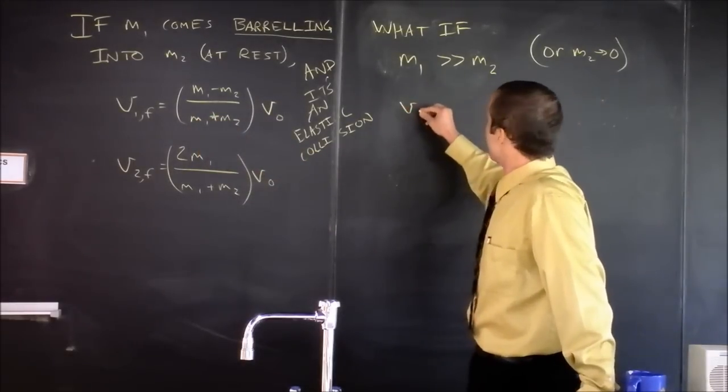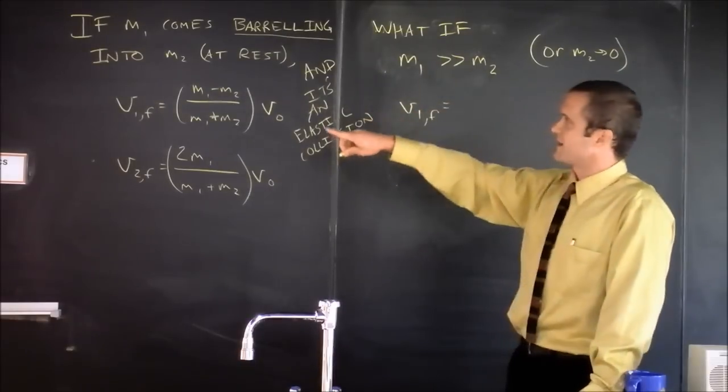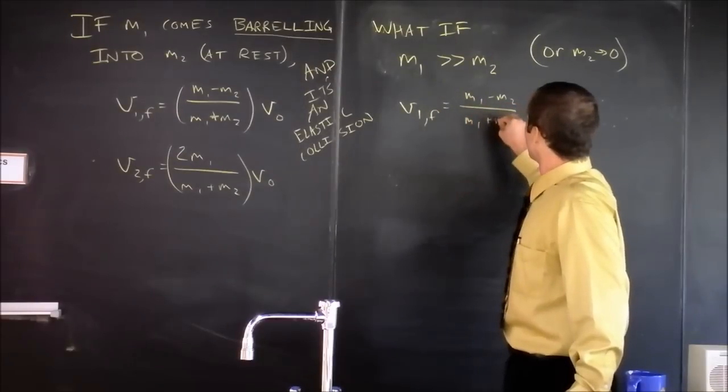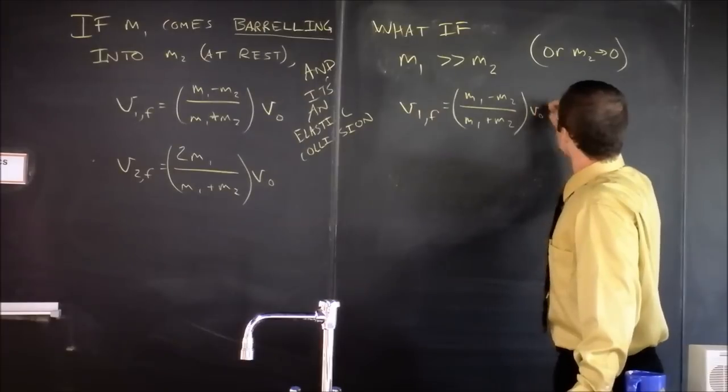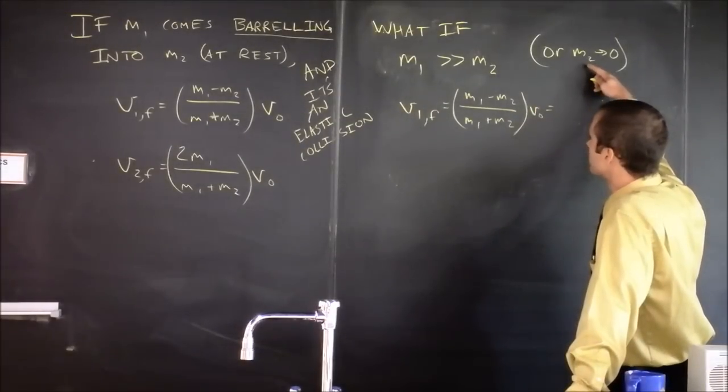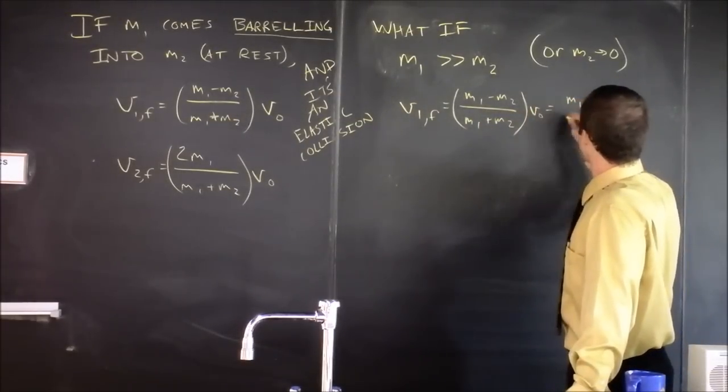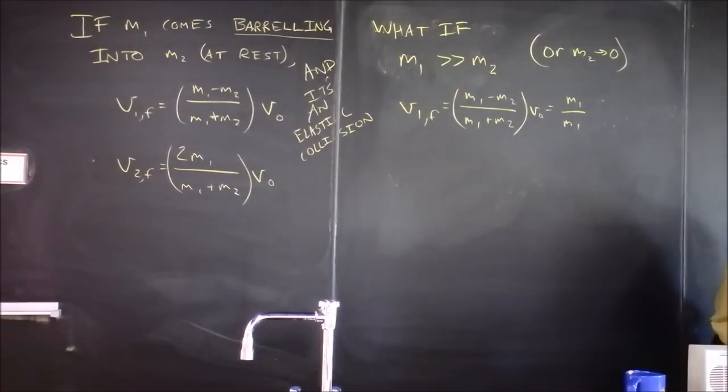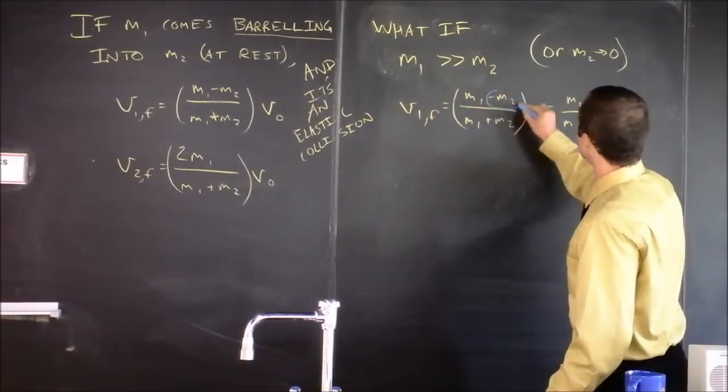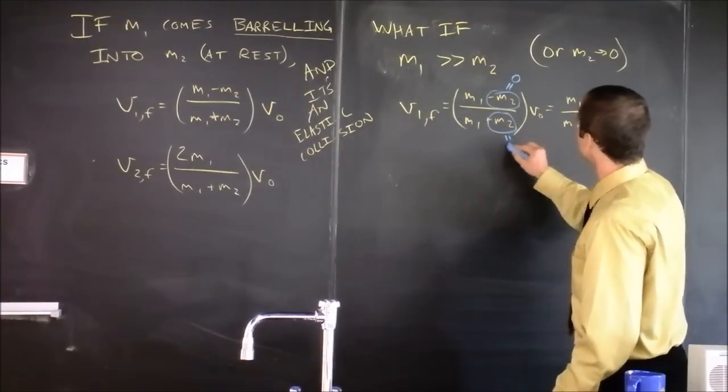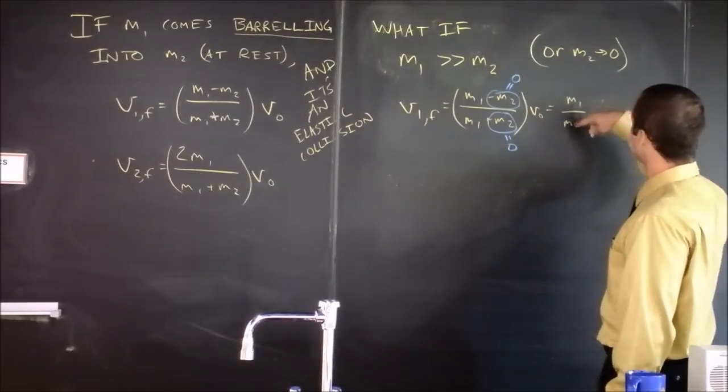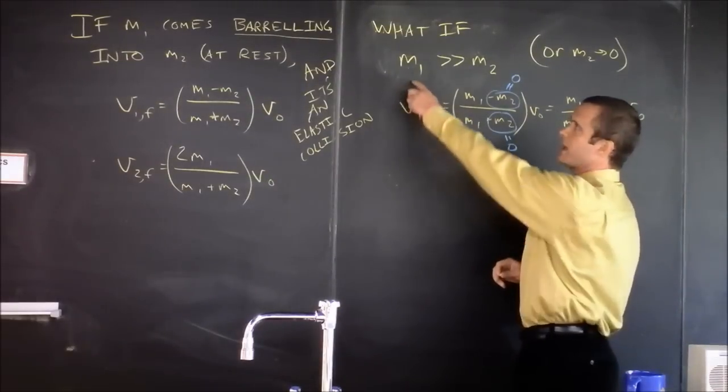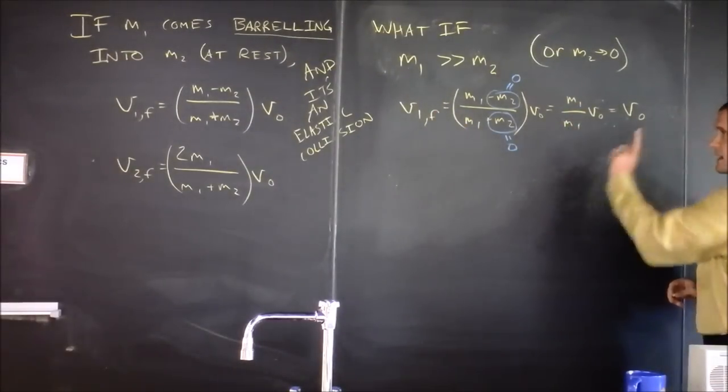So let's look at the final velocity of the massive thing. How does that change? We're going to have M1 minus M2 over M1 plus M2 times V0. And we're supposed to say M2 goes to zero. So we're going to have M1 over M1 if, as we promised, these guys are going to zero. Check them out. That's zero and that's zero. So this is M1 over M1 times V0, which you guys know as V0. So the initial object, the guy coming in, continues unimpeded at its initial velocity.